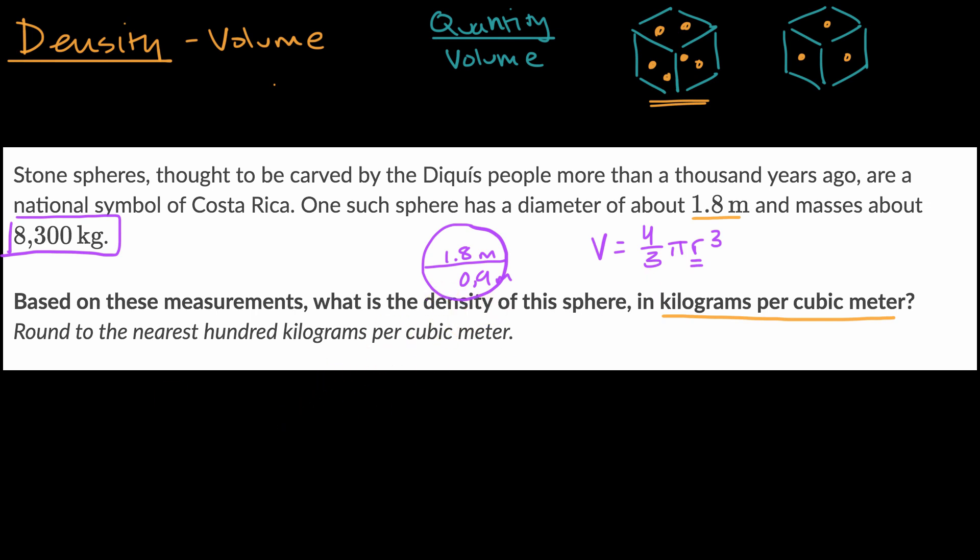So the volume of one of these spheres is going to be 4/3 π times 0.9 to the 3rd power. And we know what the mass is. The mass in that volume is 8,300 kilograms.